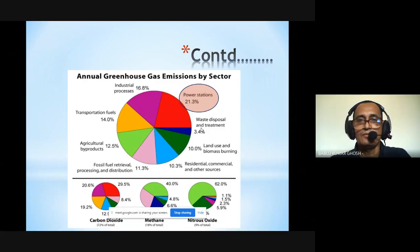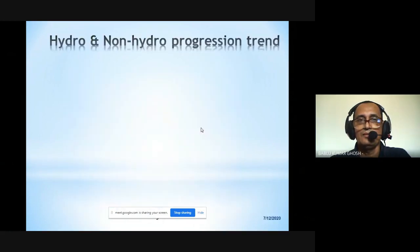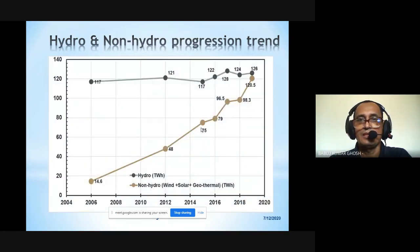Renewable technology is classified into two states: natural and non-natural or industrial development. Hydro is a natural generation prospect. Non-hydro includes windmills and solar photovoltaic. You can see that since 2006, the non-hydro contribution was very less, but it's tremendously increased since 2006 until 2019.